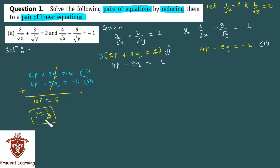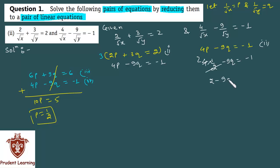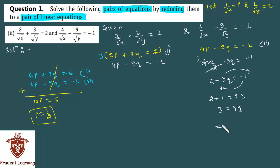Now that we have the p value, we can substitute it into any equation to find q. Putting p equal to 1 by 2 into the second equation: 4 into 1 by 2 minus 9q equals minus 1. The 4 and 2 cancel to give 2, so 2 minus 9q equals minus 1. Rearranging, 9q equals 3, which gives us q equal to 1 by 3.